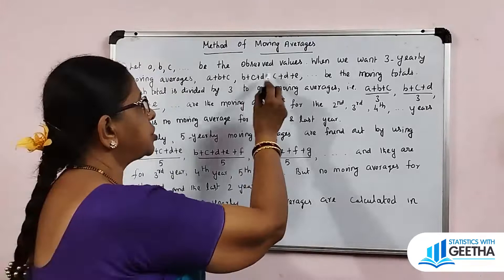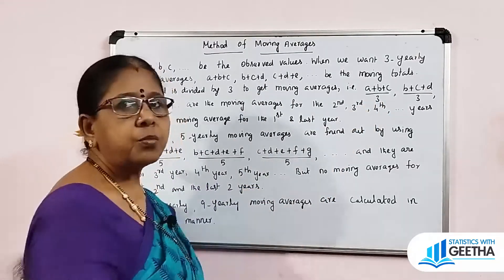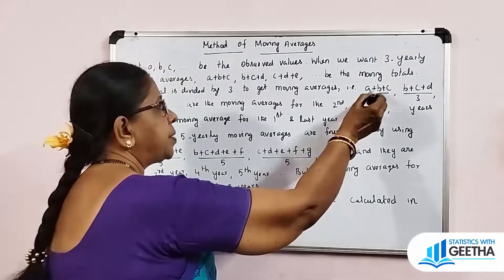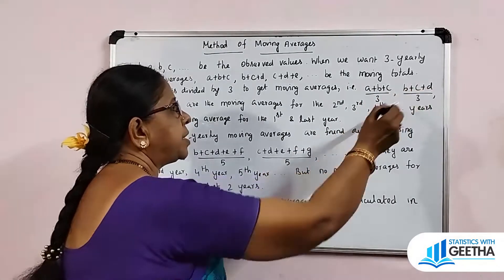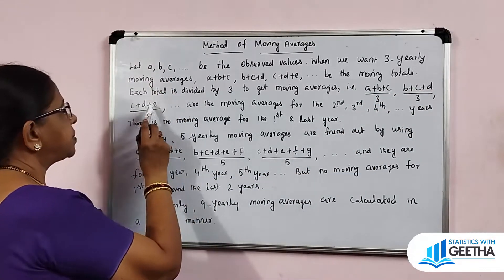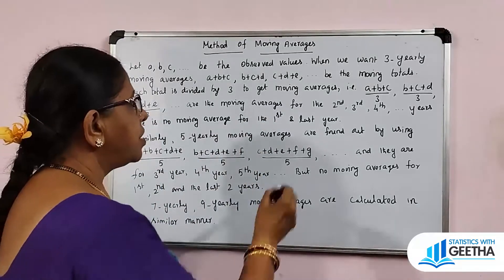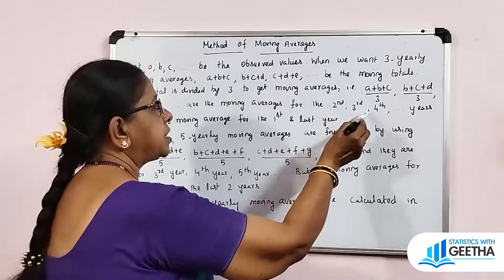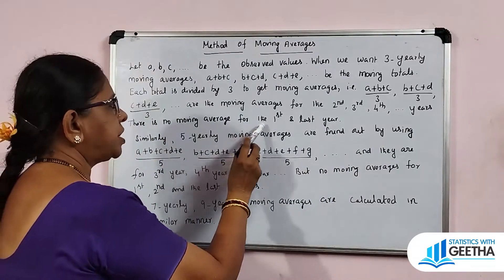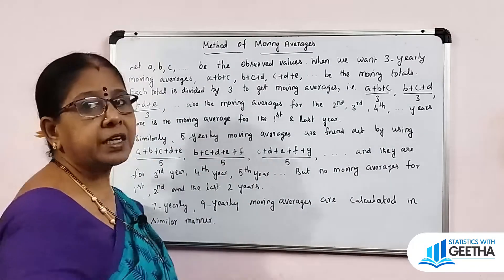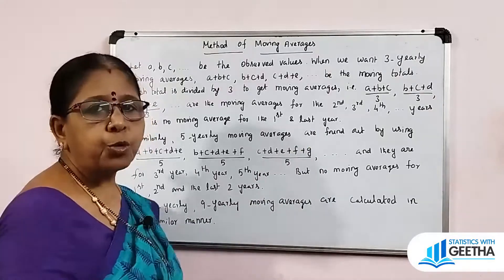So the moving averages are: A+B+C divided by 3, B+C+D divided by 3, C+D+E divided by 3, etc., for the 2nd year, 3rd year, 4th year, and so on. There is no moving average for the 1st and last year.